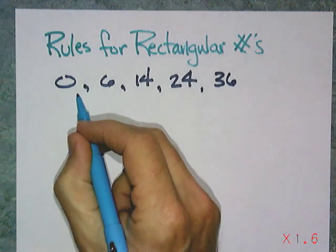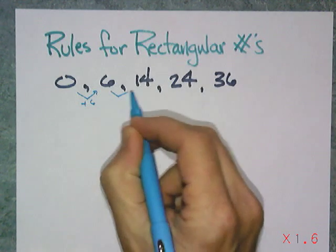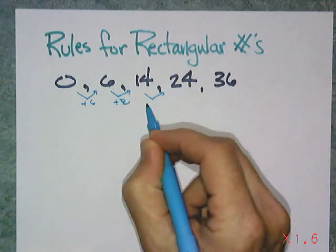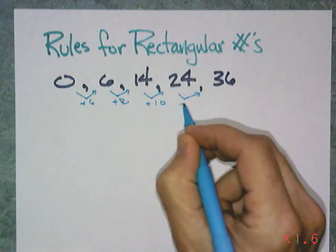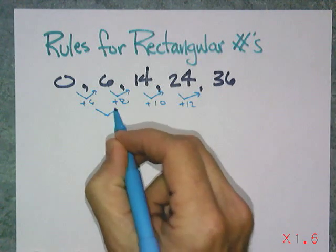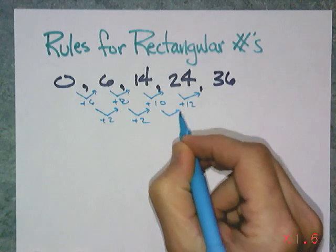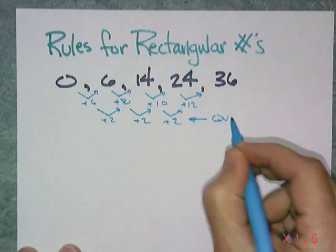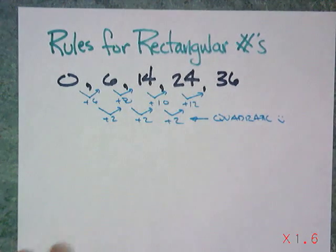Rectangular numbers are quadratic patterns that have integer values for their side lengths. We can see this is a quadratic pattern because if we look at the differences, it goes plus 6, plus 8, plus 10, and plus 12. The second difference here is constant plus 2. So that's what tells us that it must be quadratic.